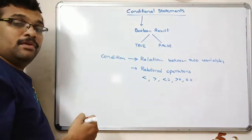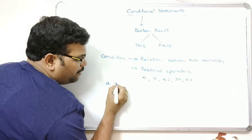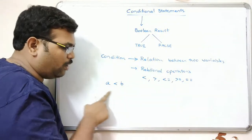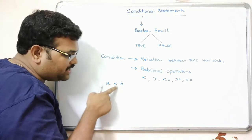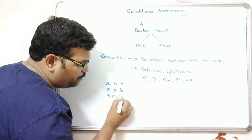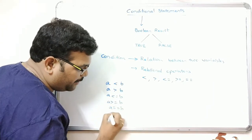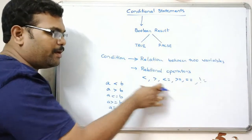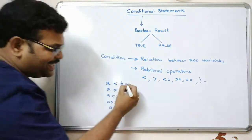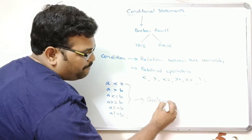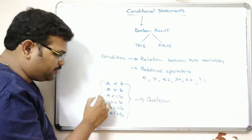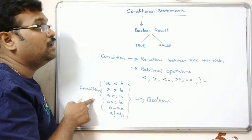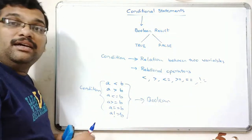We also have double equals to (==). Suppose a and b are two variables. When we use a relational operator between two operands that is called a simple condition: a < b, a > b, a <= b, a >= b, a == b, a != b. All these are relational operators, and using them between two operands creates a condition whose result is a boolean.